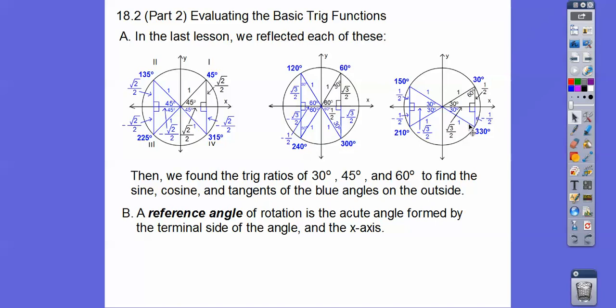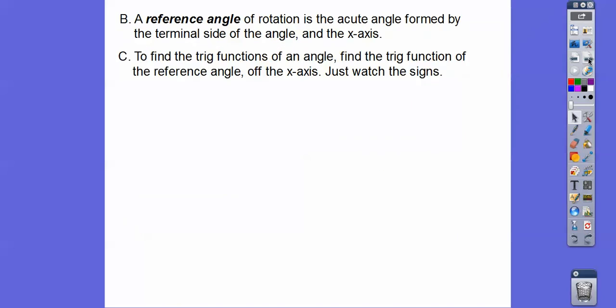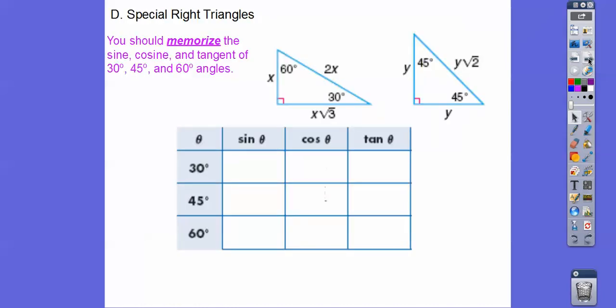If I'm talking about this 330-degree angle, its reference angle is 30 — it's the acute angle off the x-axis right there. So what that does is let us find the trig functions of an angle by finding the trig functions of the reference angles off the x-axis. We just have to watch for the signs.